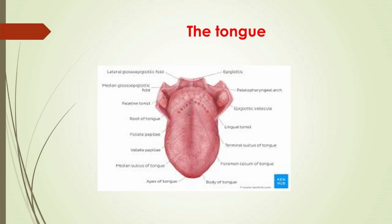The tongue is a muscular organ in the mouth of most vertebrates that manipulates food for mastication and is used in the act of swallowing. It is important in the digestive system and is a primary organ of taste. The tongue's upper surface (dorsum) is covered by taste buds housed in numerous lingual papillae, kept moist by saliva, and richly supplied with nerves and blood vessels. A major function of the tongue is enabling speech in humans.